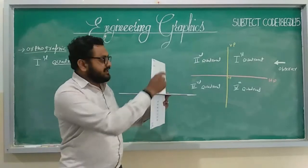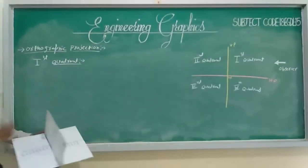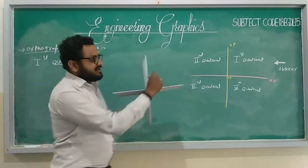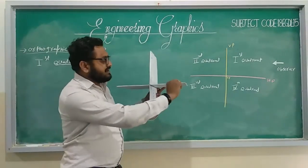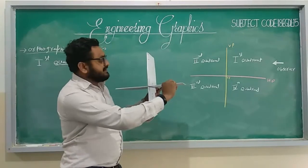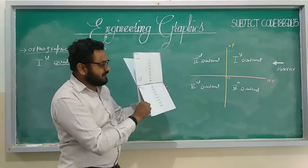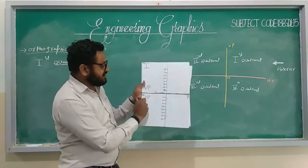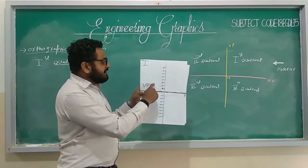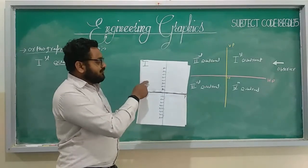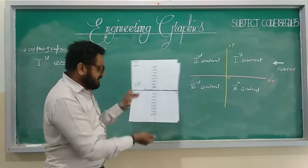For the first quadrant: to make it 2D, we need to rotate the horizontal plane clockwise. See what happens — when you open it, this horizontal plane will come downside. The intersection line is XY, so VP will be above this line and HP will come below the XY line.